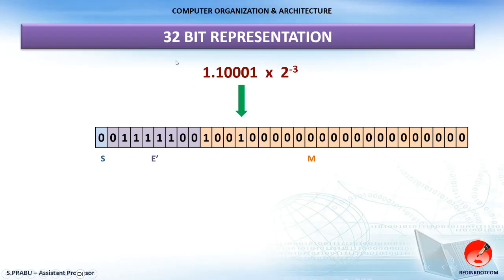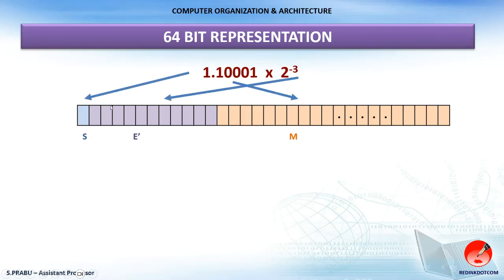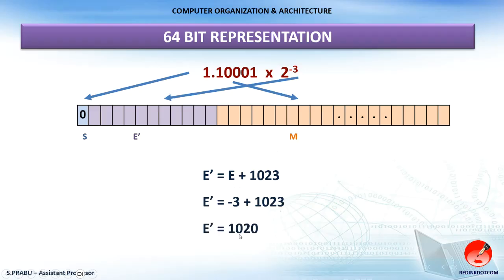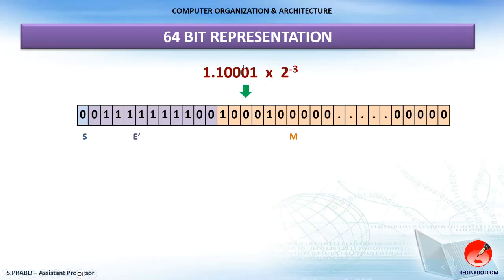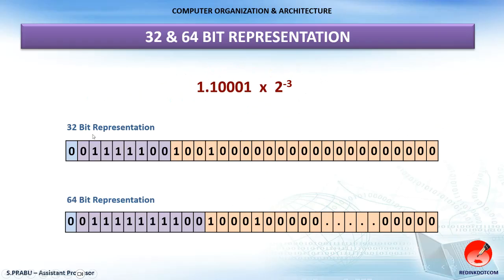Now let's represent the same number in 64-bit format. The first bit is the sign bit (0 for positive). The next 11 bits are for the exponent value. The remaining 52 bits are for the fractional mantissa. For 64-bit, the bias value is 1023. So E′ = −3 + 1023 = 1020. The binary equivalent of 1020 is a 10-bit number; adding a leading 0 gives an 11-bit exponent. The mantissa bits (the fractional value) are written into the remaining 52 bit positions, padded with zeros.